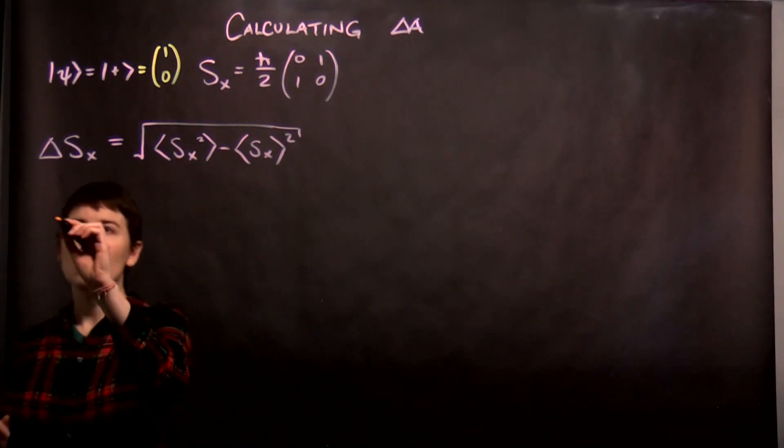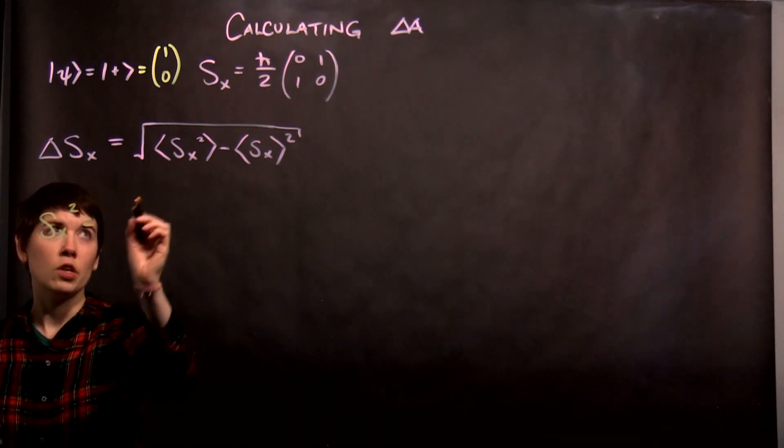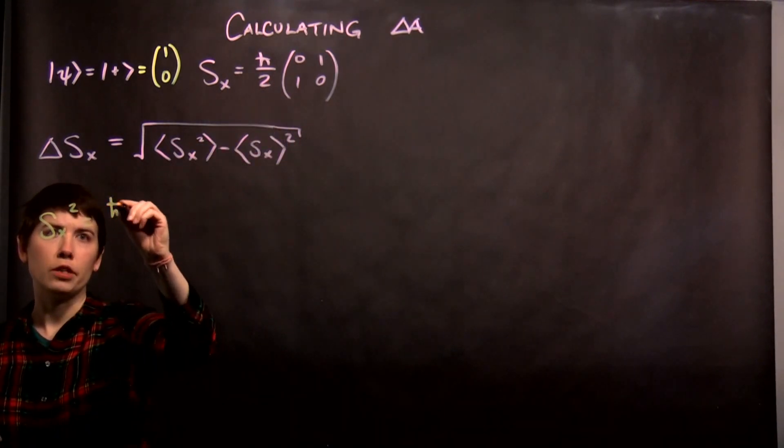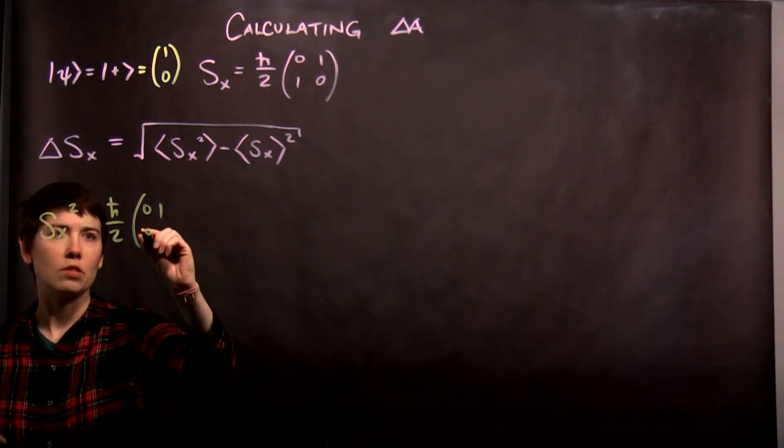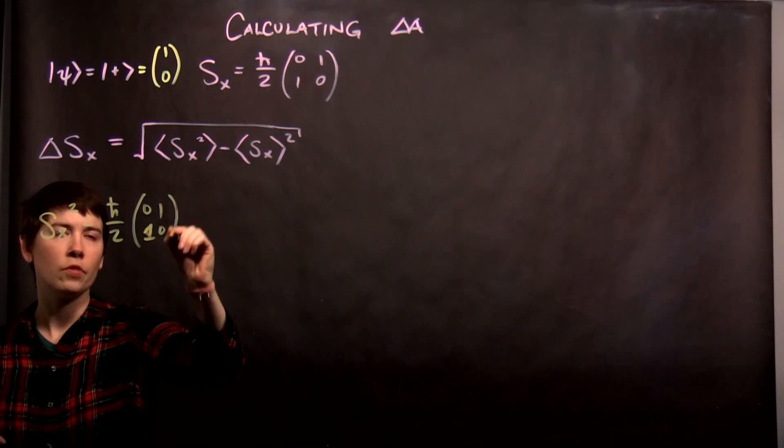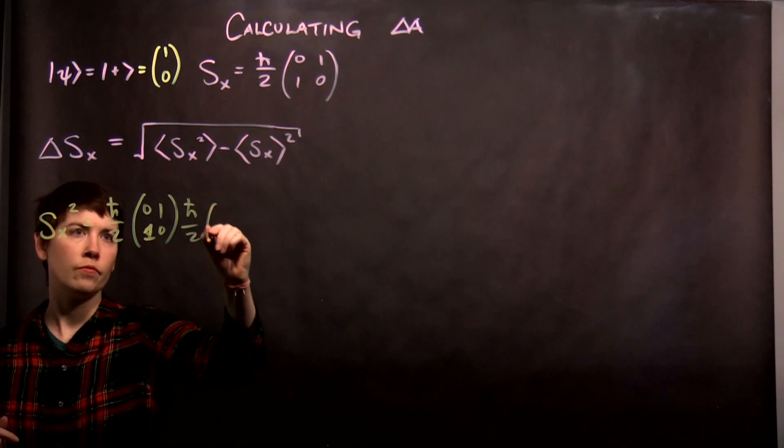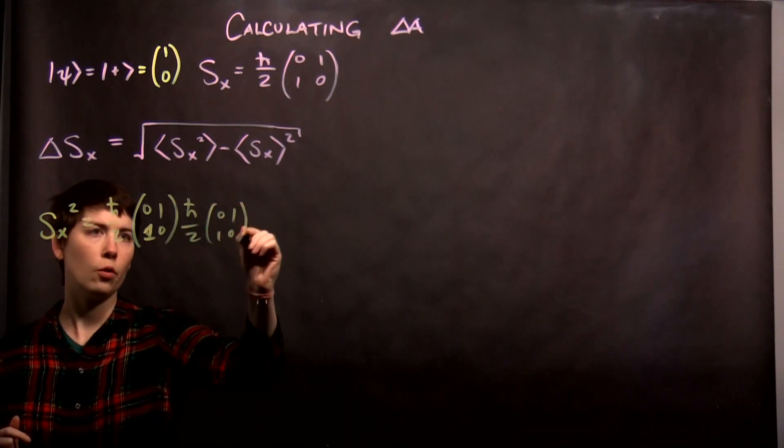And so if I want to calculate what SX squared is, that's just taking my operator and multiplying it by itself. Not that bad. Except I made a mistake. 1-0. And then H bar over 2. 0-1. 1-0.